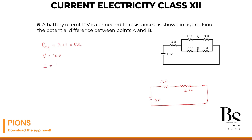The current will be 10 divided by 5, which equals 2 ampere. So 2 ampere flows across the 3 ohm — voltage equals I into R, which is 6 volt. Voltage across the 2 ohm will be I into R, which is 4 volt. Cross-checking: 6 plus 4 is 10, matching the battery voltage.